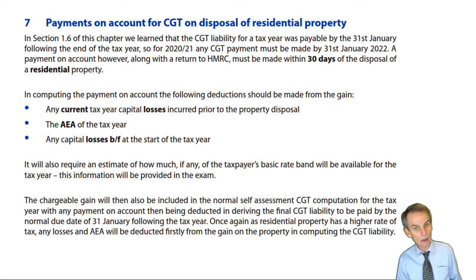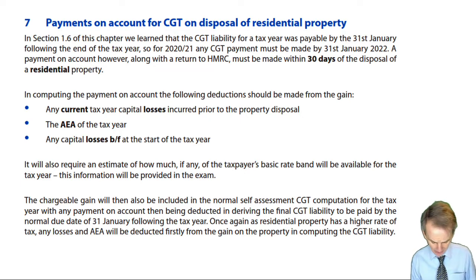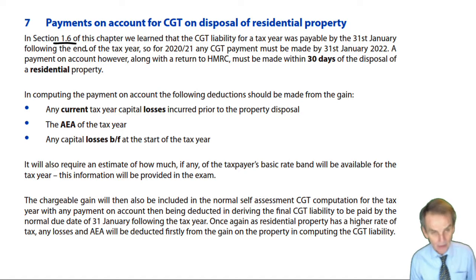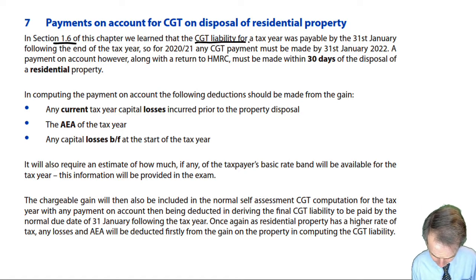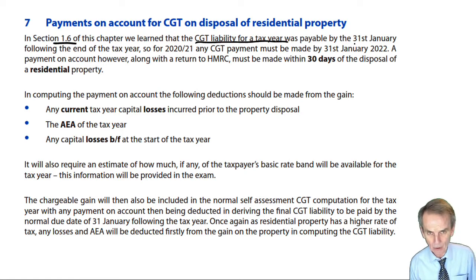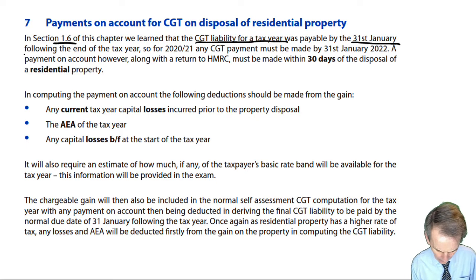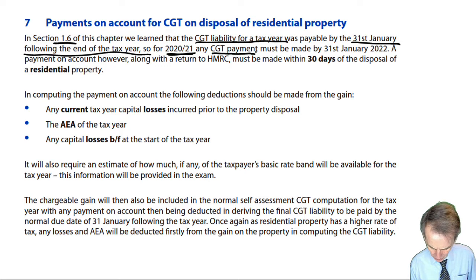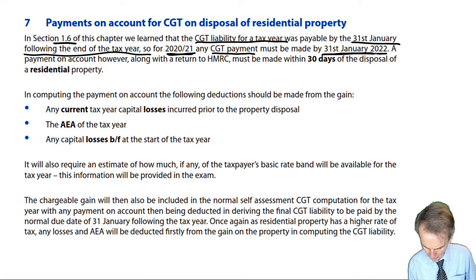Let's go back to our early studies. In section 1.6 we saw that the CGT liability for a tax year was payable by the 31st of January following the end of the tax year. So for tax year 2021, CGT had to be paid by 31st of January 2022.